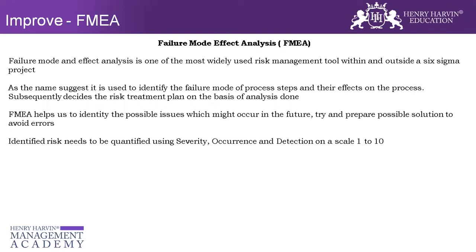Occurrence is the second component. When you anticipate a failure mode — for example, if you're developing an application and the first step is that the application should fetch the customer's details using their mobile number, such as name, address, and location — let's say there's a failure mode where it doesn't accept the input. I might give it a severity of eight, nine, or even ten. For occurrence, I try to anticipate how many times this error can happen on a scale of one to ten, and again give a rating of one to ten.